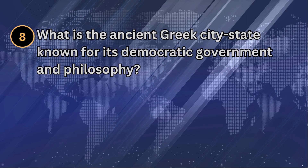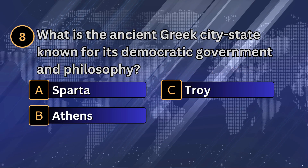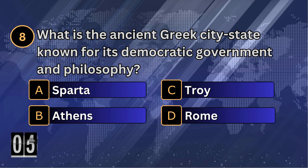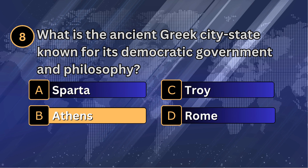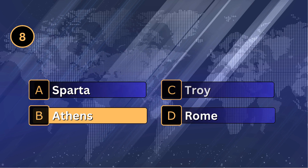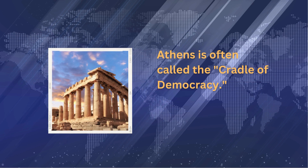What is the ancient Greek city-state known for its democratic government and philosophy? Athens. Athens is often called the cradle of democracy.